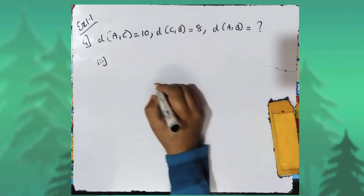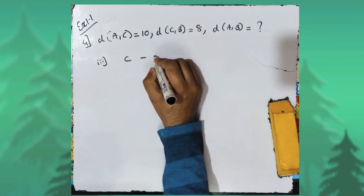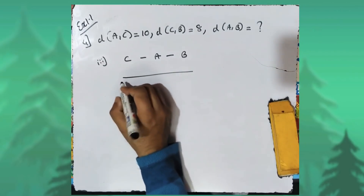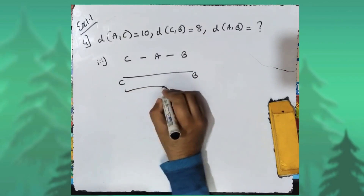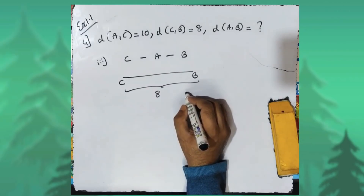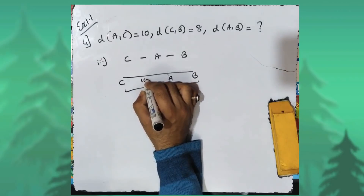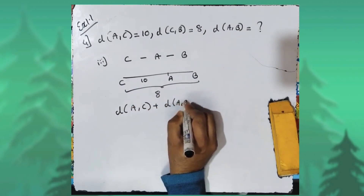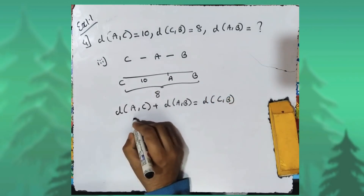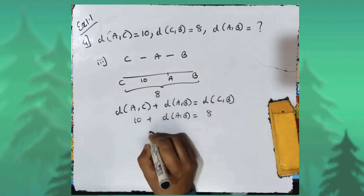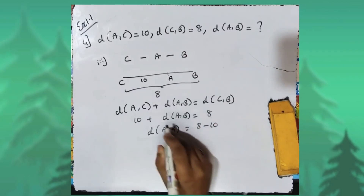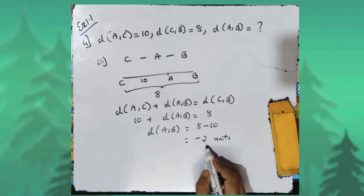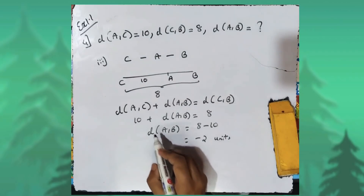Third possibility: point A is between C and B. The entire distance CB is eight, and distance AC is ten. Distance AC plus distance AB equals distance CB, so ten plus distance AB equals eight. Distance AB would become eight minus ten, which is minus two units. However, distance cannot be negative, so we discard this possibility.